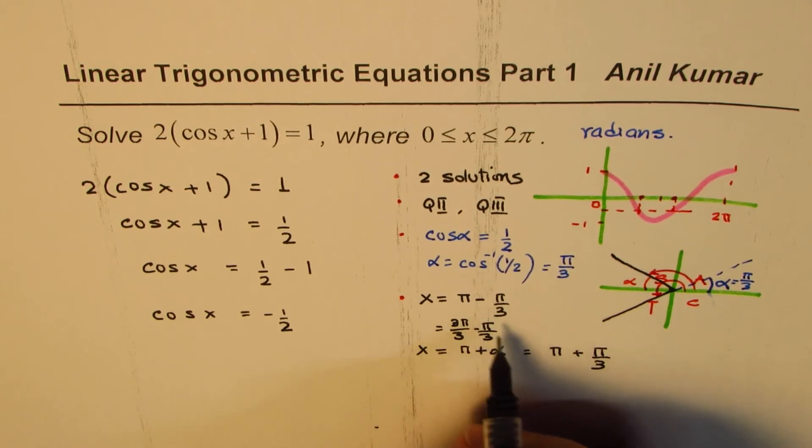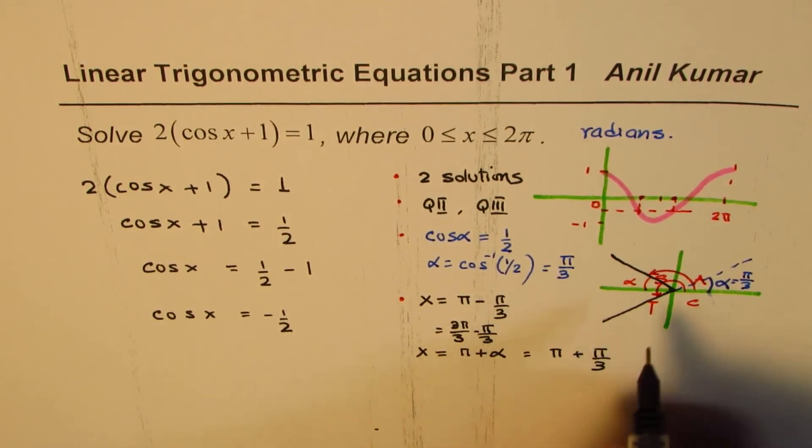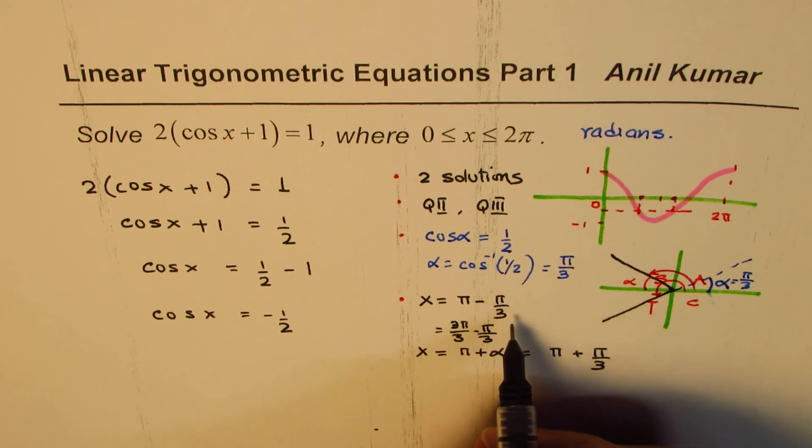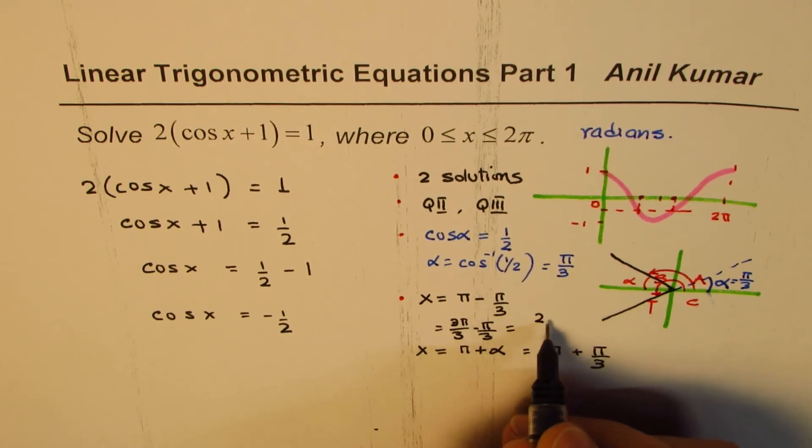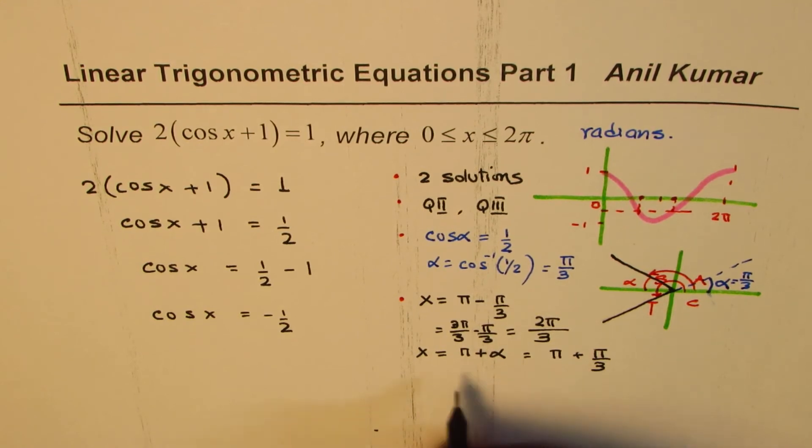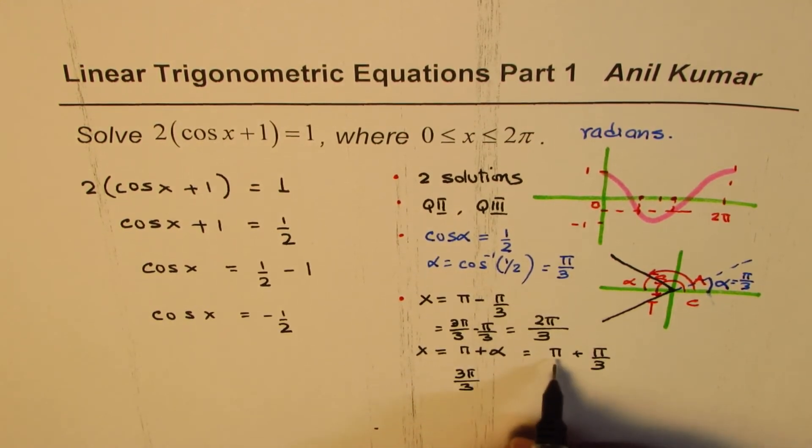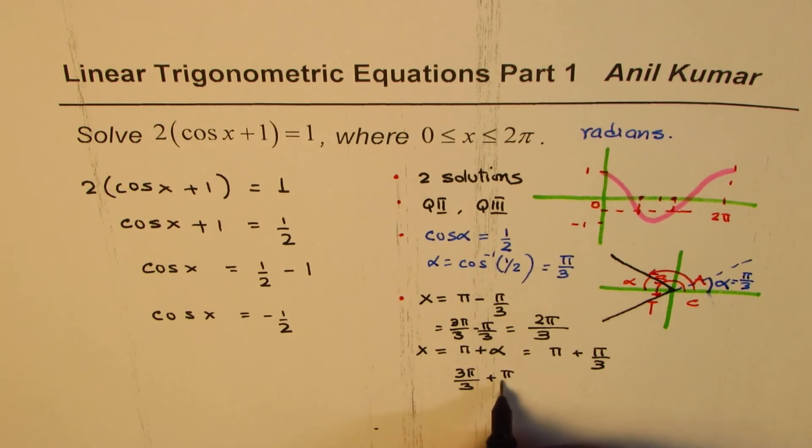π - π/3 could be written as 3π/3 - π/3, which is 2π/3. So we get 2π/3 as one solution.